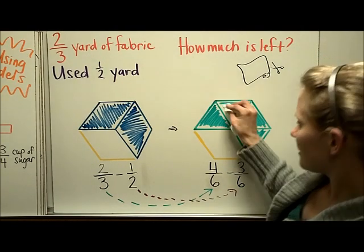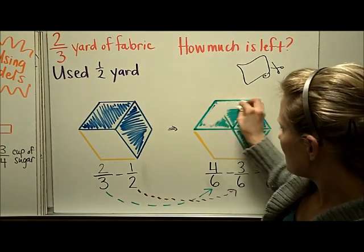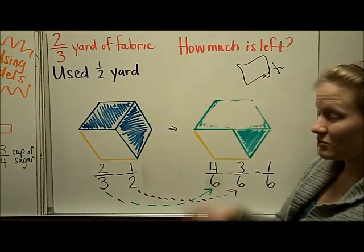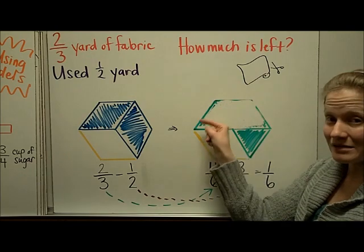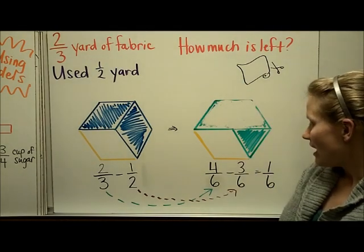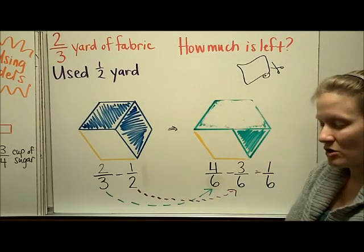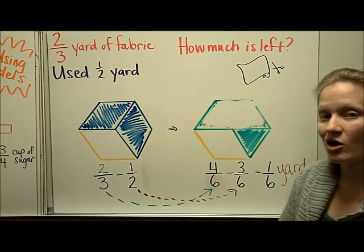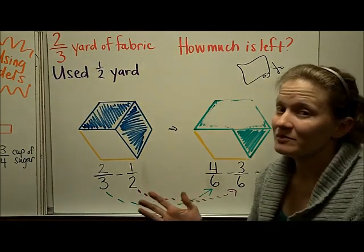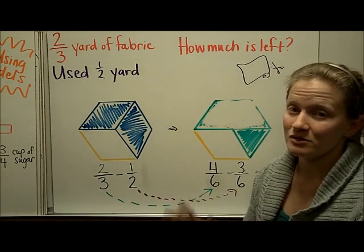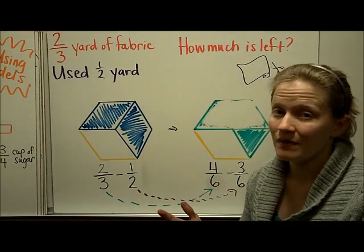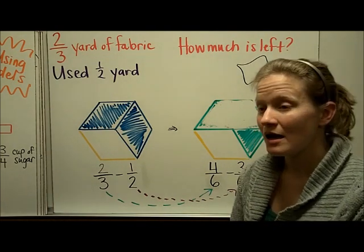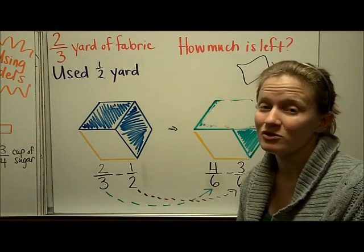In order to do that, I can just do an erase here. I've taken away three-sixths, which you can see is the same size as one-half of the hexagon, and I'm left with one-sixth of a yard of fabric remaining. So in all these problems, we have used a model in order to add and subtract fractions with unlike denominators. The next video will show you how to use the least common multiple in order to do it without a model.